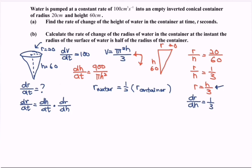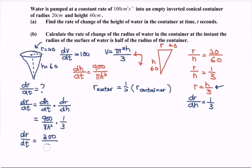Substituting, dr/dt = (900 / πh²) × (1/3), which gives dr/dt = 300 / (πh²).